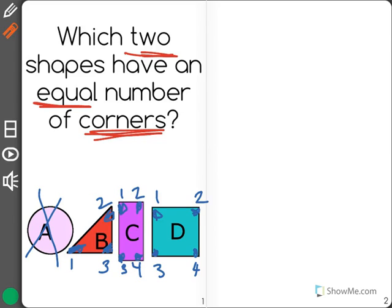Because the question is asking which two shapes have the same or equal number of corners, I can see that C and D both have four corners. So the answer is C and D.